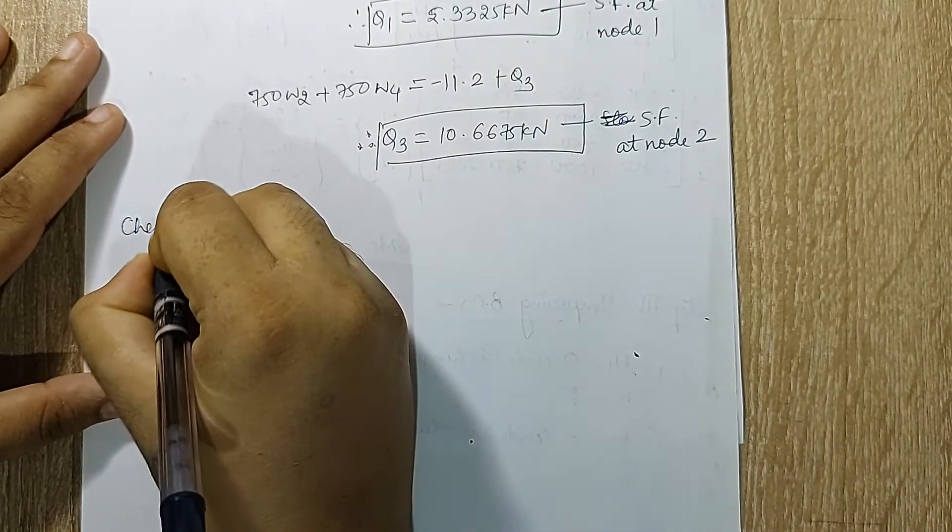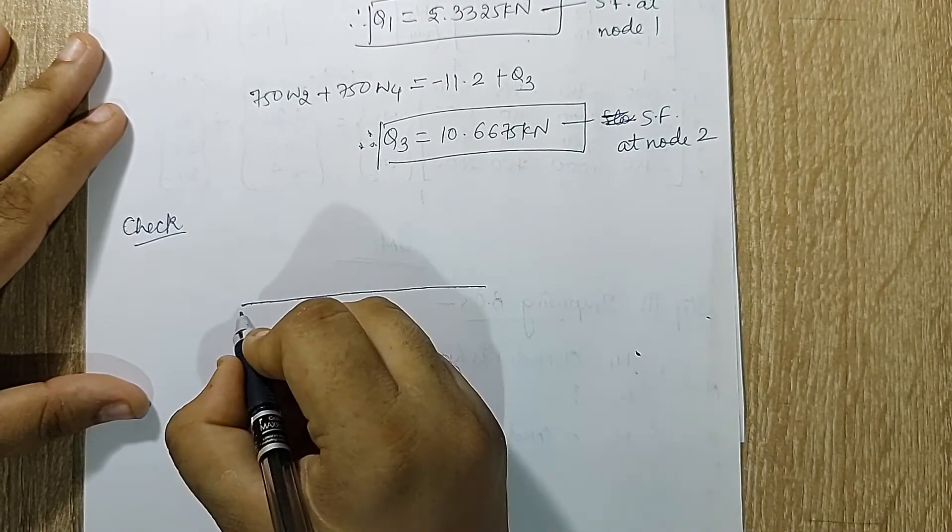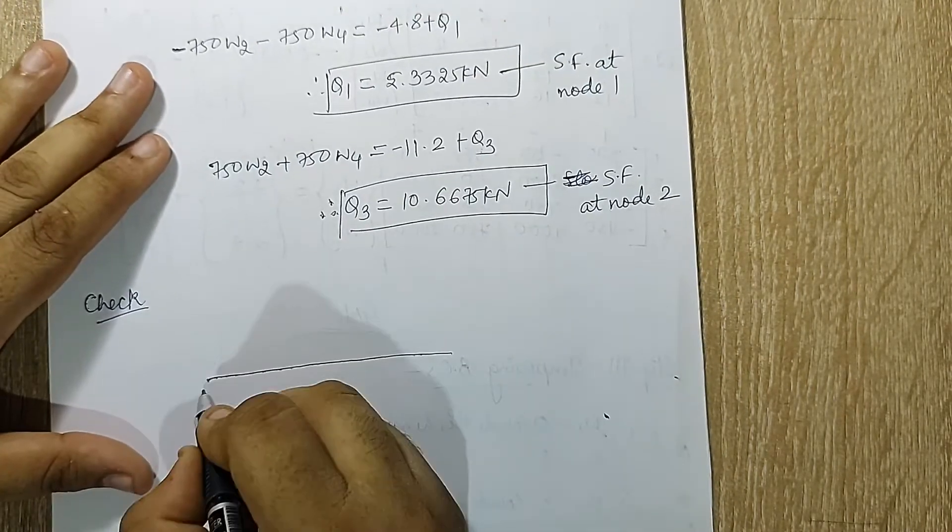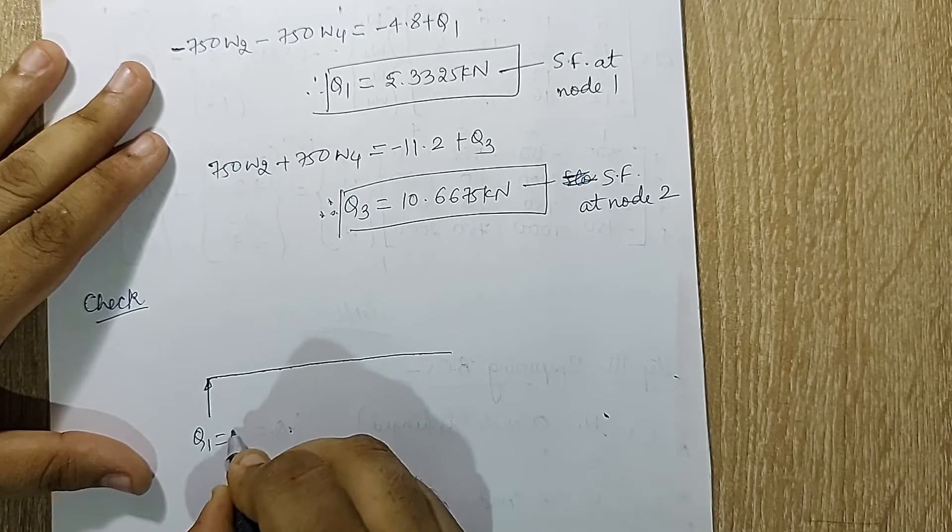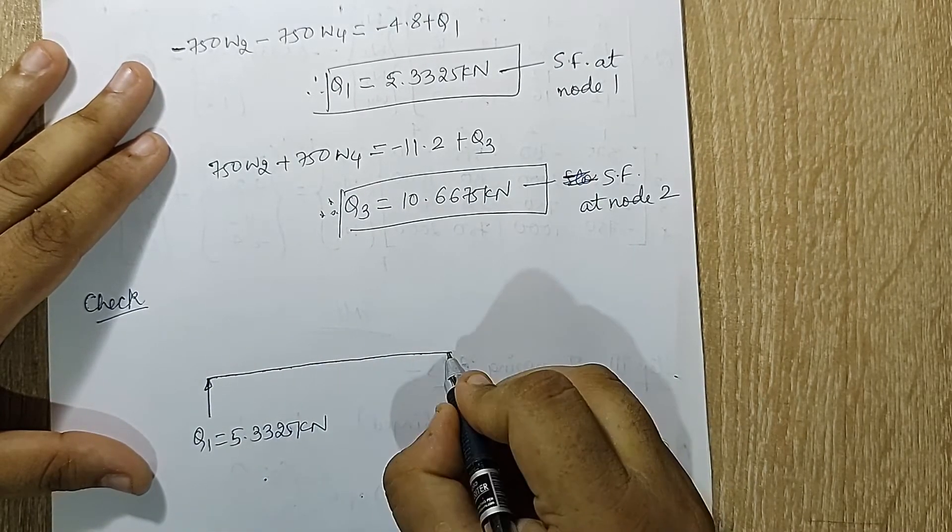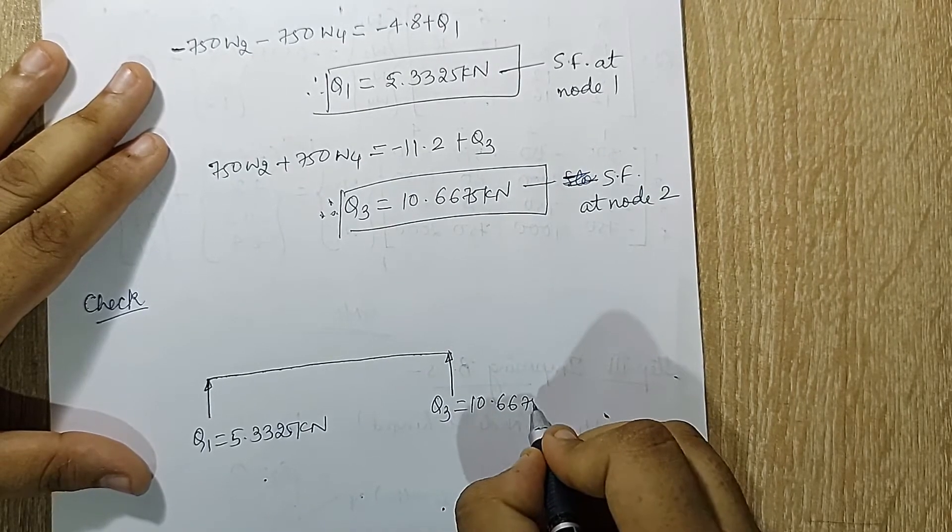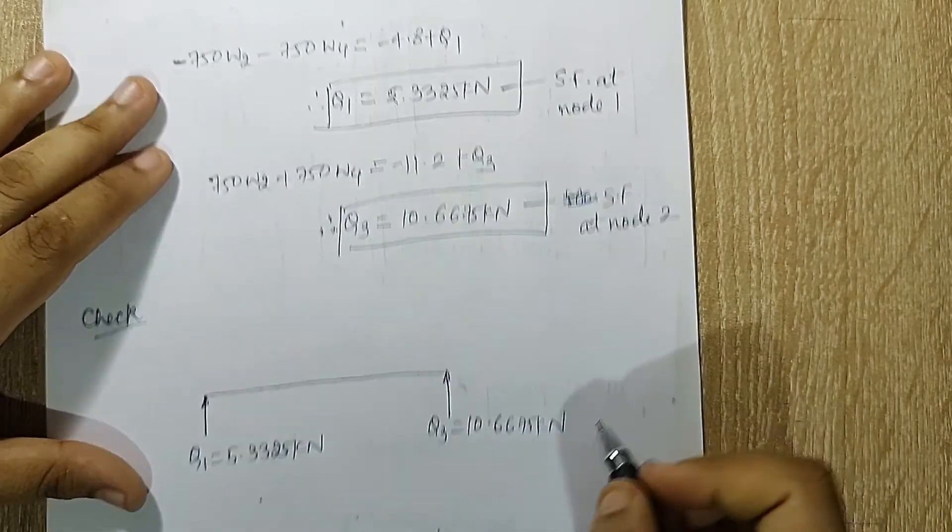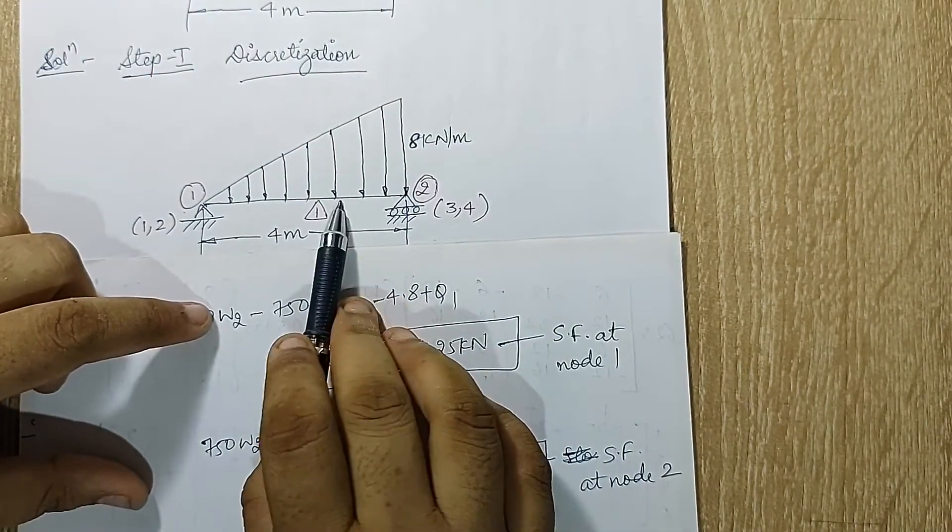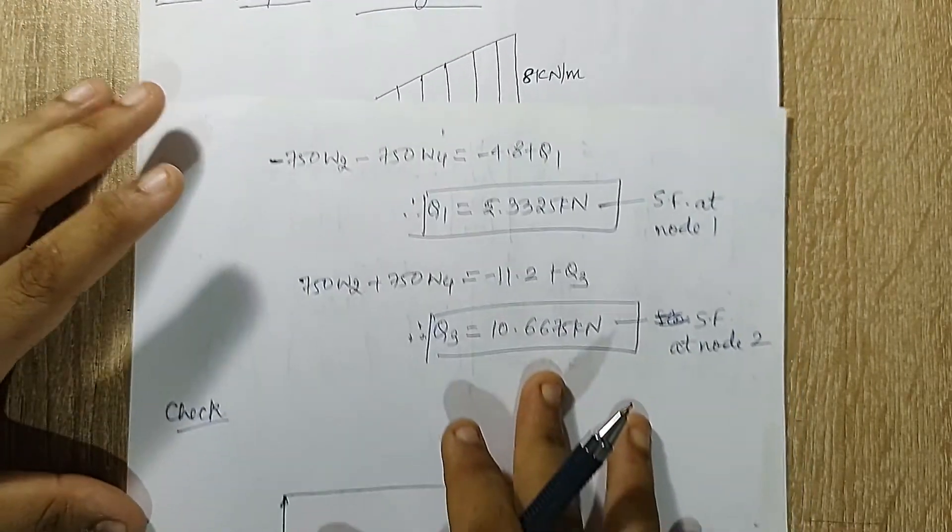Now next I'll go for the check step. I'll first draw the FBD of this body. Here I'll have two reactions. So I'll write down here q1 is equal to 5.3325 kN, and I have q3 as 10.6675 kN. Now UVL can be solved as half base into height, and it is placed at one third from the heavily loaded end.